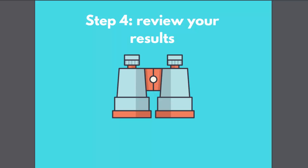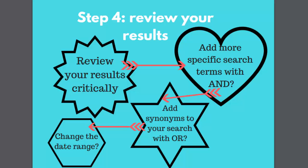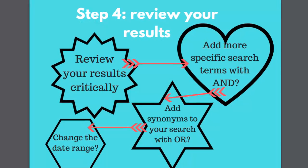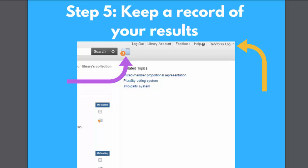Step four, once you have done a search, is to review your results critically. You can then revise your search terms or parameters such as date range if needed. Too many results? Adding in more specific search terms with AND will reduce your results list, or you may want to scale back your date range. Too few results? Considering alternative synonyms or related terms and adding them to your search with OR will broaden it, as will increasing the date range.